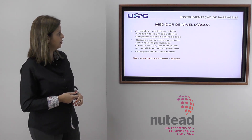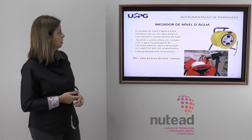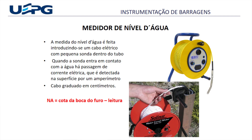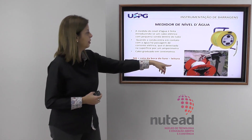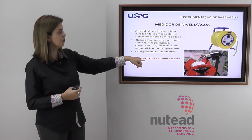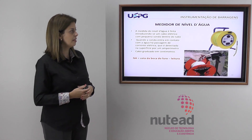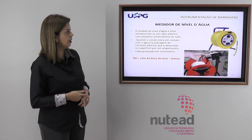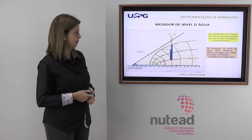A medida do nível d'água é feita introduzindo-se um cabo elétrico com uma pequena sonda dentro do furo. Quando essa sonda entra em contato com a água, há passagem de corrente elétrica, detectada na superfície por um amperímetro. Esse cabo é graduado em centímetros, e conhecendo a cota da boca do furo e a leitura, consegue-se saber onde se encontra a água.